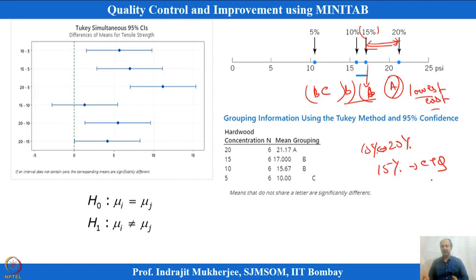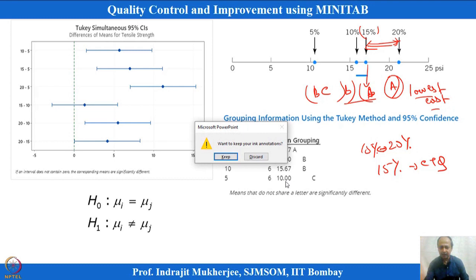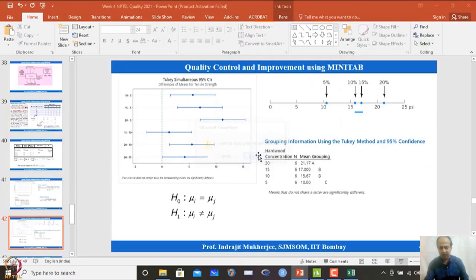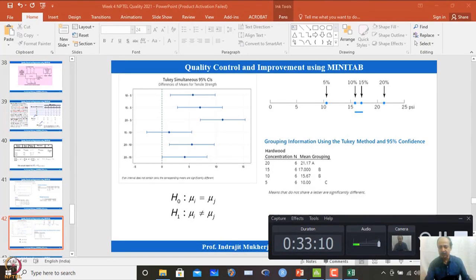The principle is: when two levels are not statistically different, go with the lowest cost setting. When a level is uniquely coded (significantly different from all others and gives the highest CTQ), freeze at that level. We will stop here and continue in the next session with assumptions checking — module adequacy check — for one-way ANOVA, before moving to multi-factor experimentation. Thank you.